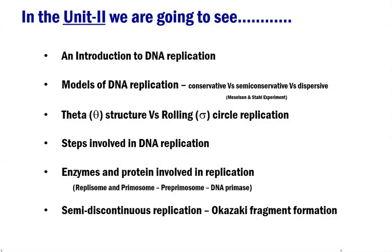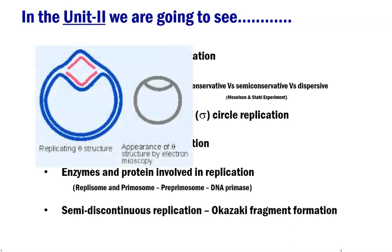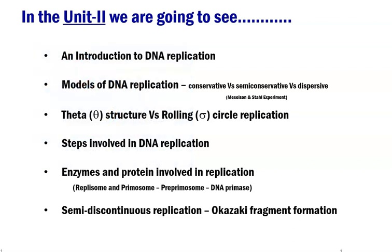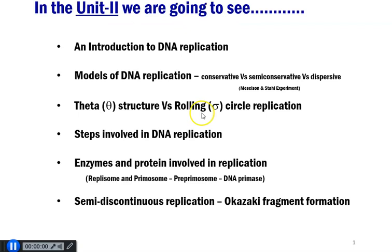Next, we are going to see the different kinds of replication, such as the theta structure of replication, bidirectional replication, or the Cairns model of replication. The other one is rolling circle replication, also referred to as sigma replication or unidirectional replication, which commonly takes place in certain DNA viruses, bacteriophage, and some circular RNA viruses.